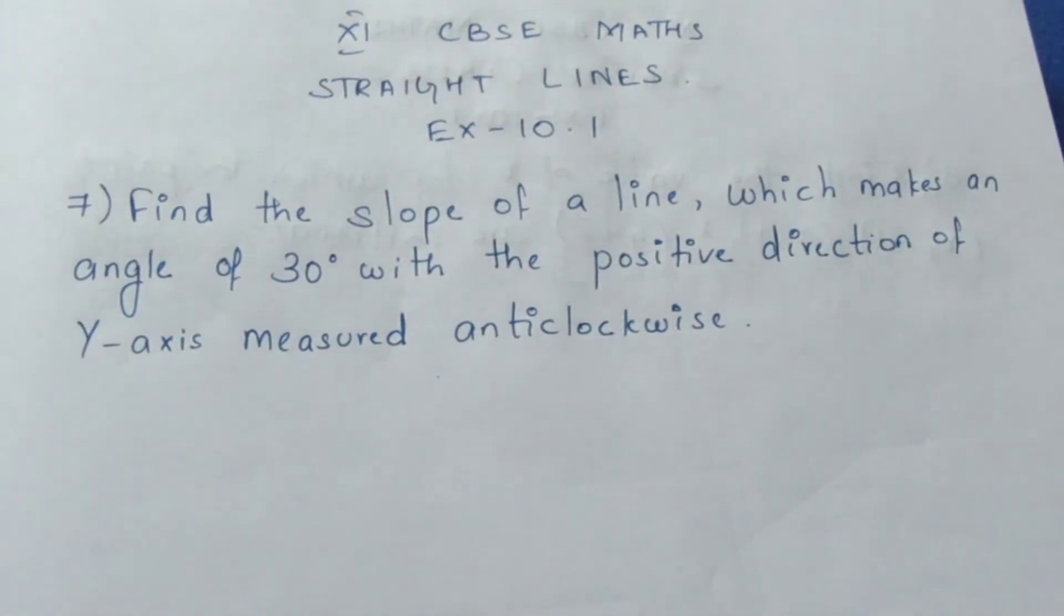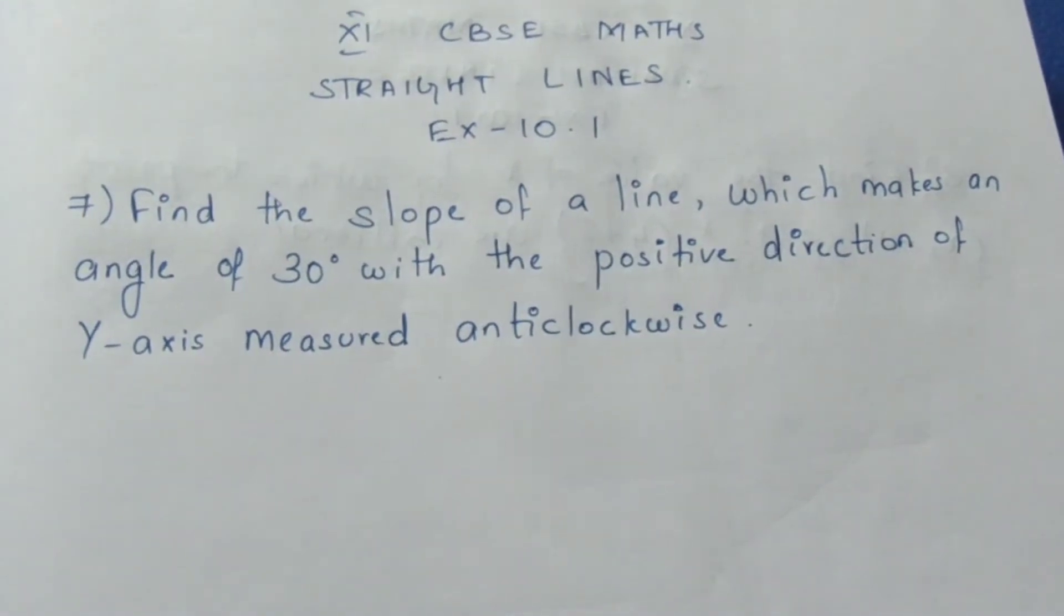Find the slope of a line which makes an angle 30 degree with the positive direction of y-axis measured anticlockwise. Only if you draw the diagram you will understand the concept here.